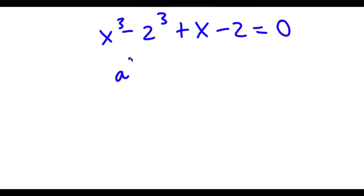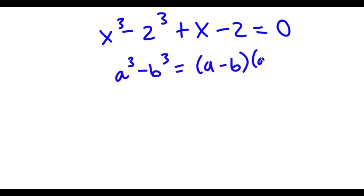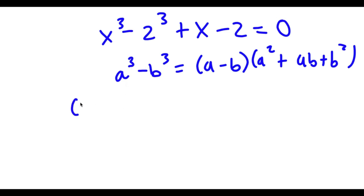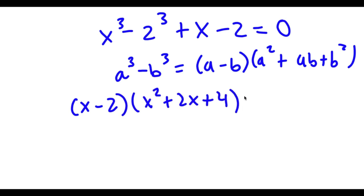Now if I have something in the form a to the power of 3 minus b to the power of 3, this is equal to a minus b times a squared plus ab plus b squared. So x to the power of 3 minus 2 to the power of 3 can be rewritten as x minus 2 times x squared plus 2x plus 4, plus x minus 2 is equal to 0.